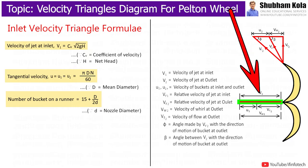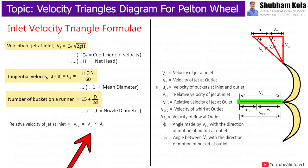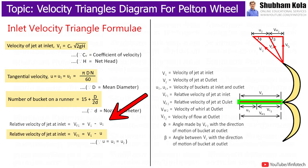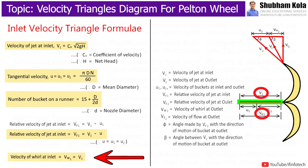From this diagram, we observe that the relative velocity at inlet, Vr1, is equal to the absolute velocity V1 minus the bucket velocity U1. Since U1 = U, and from the figure we can observe that Vw1 = V1.